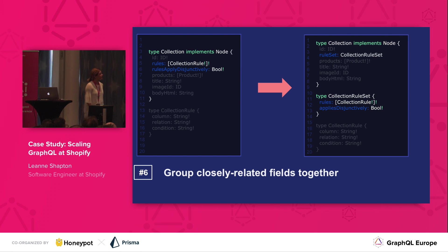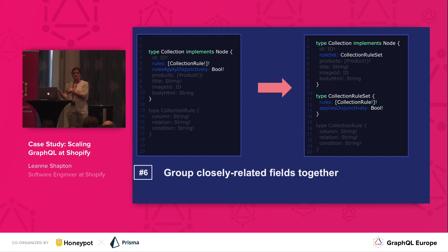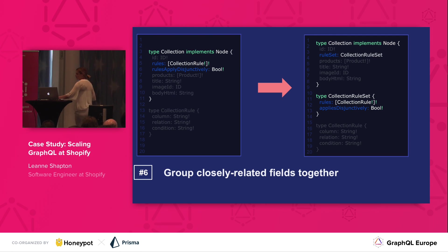The next two fields are rules and rules applied disjunctively. Rules are just a list of rules that would be returned — for manual collections this would return an empty list. Rules applied disjunctively means that for a product to be published to this collection, it either has to follow all rules or only one of the rules, so this will return true or false. This arises a problem with manual collections — because what do we return there? Our next guideline can help us out.